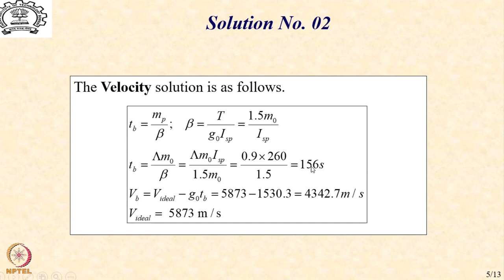With this Tb, we go back to the VB expression under gravity, which is nothing but V-ideal minus G0·Tb. Doing this, we find that the velocity is going to be 4342.7 meters per second, as against 5873 for the ideal burnout case.